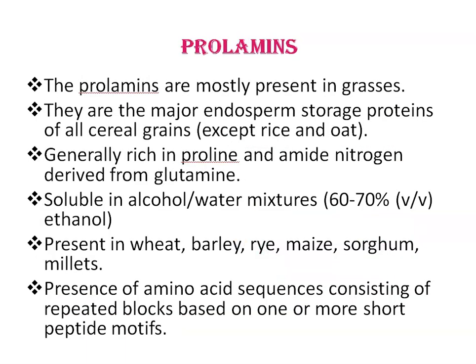Prolamines are the major endosperm storage proteins of all cereal grains except rice and oat. They are generally rich in proline and amide nitrogen derived from glutamine, and are soluble in an alcohol-and-water mixture. They are much more variable in structure than 7S and 11S globulins, and are present in wheat, barley, rye, maize, sorghum, and millet. Prolamines contain amino acid sequences consisting of repeated blocks based on one or more short peptide motifs, for example methionine, glycine, and histidine.